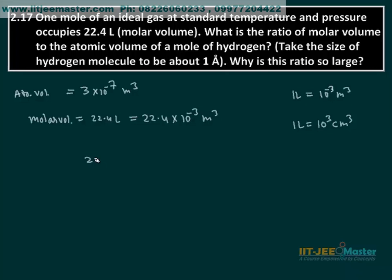Let us find the ratio of these two: 22.4×10^-3 m³. The required ratio is 22.4×10^-3 divided by 3×10^-7. This will be about 7×10⁴ nearly.